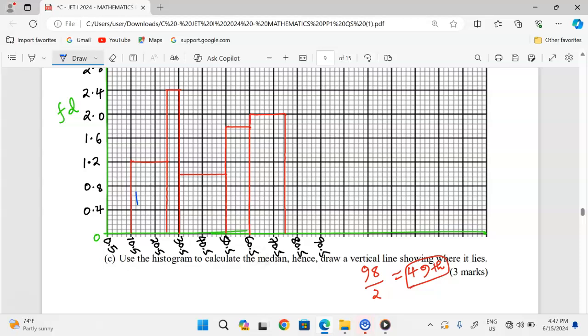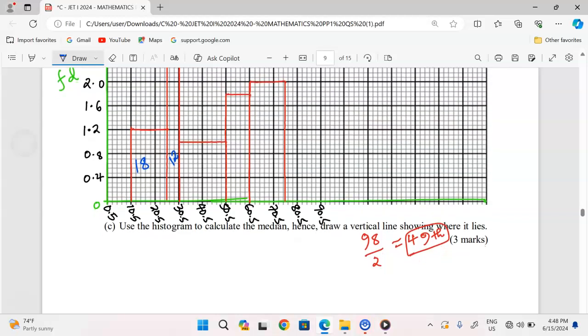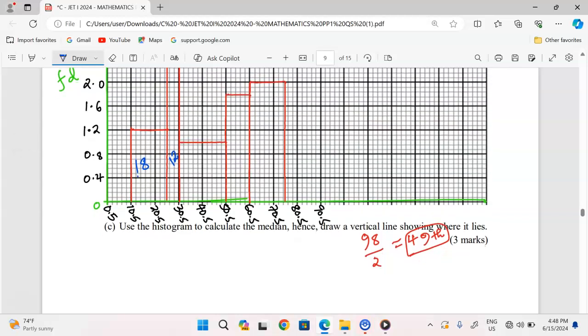But remember, we want the mark scored by the 49th student. The first 18 students are scoring up to 25.5. The next 12, which gives a total of 30, are now scoring up to 30.5.